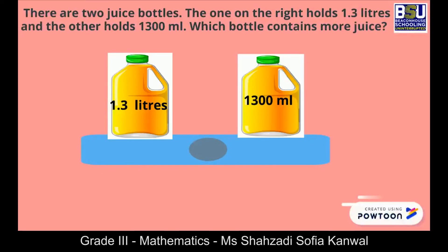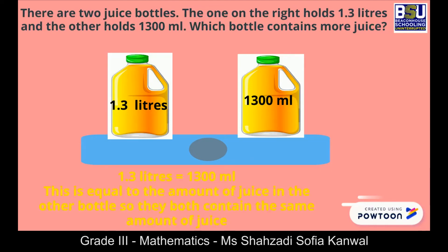Let's look at another example. There are two juice bottles. The one on the right holds 1.3 liters and the other holds 1300 milliliters. Which bottle contains more juice? If we convert 1.3 liters to milliliters, then it will be 1300 milliliters. This is equal to the amount of juice in the other bottle, so they both contain the same amount of juice. Absolutely correct.